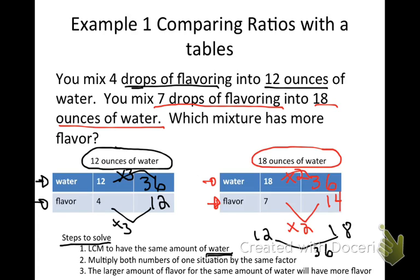Look at the last step — the larger amount of flavor for the same amount of water tells you which is stronger. I have the same amount of water for both. This one has fourteen drops of flavor per thirty-six ounces of water, so that one is going to have more flavor.